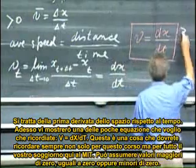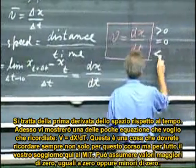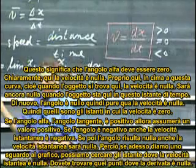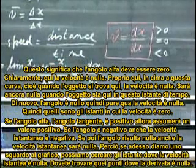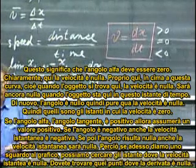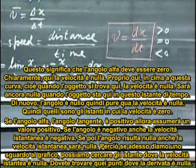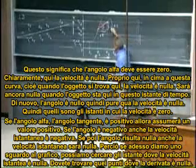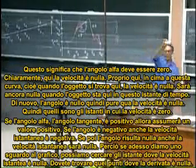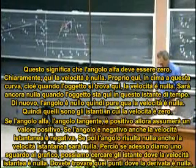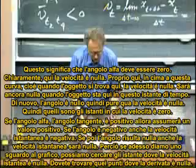And this could be larger than zero, this could be zero, and this could be smaller than zero. If the angle of alpha, the tangential, is positive, then it is a positive value. If it is negative, however, when you're here, then it is a negative velocity. And if the angle of alpha is zero, then the velocity is zero.